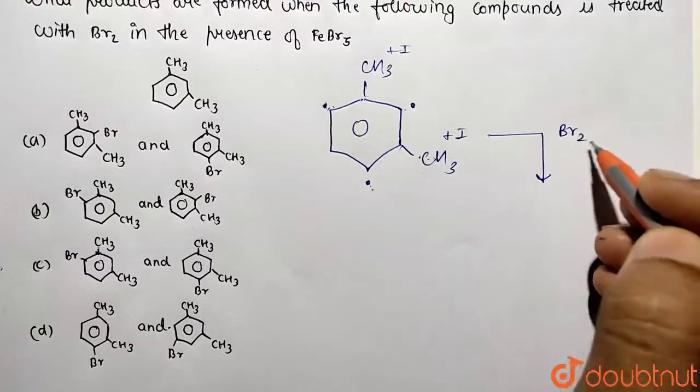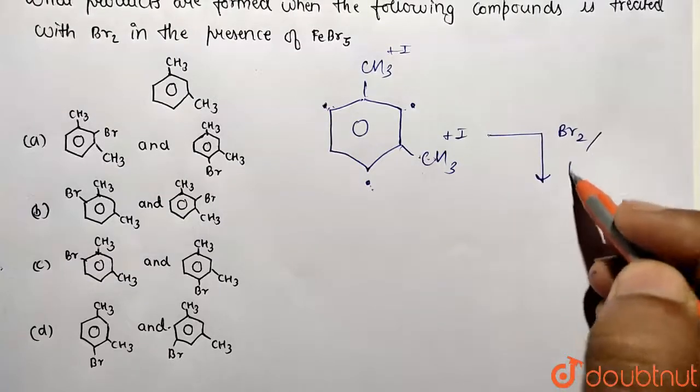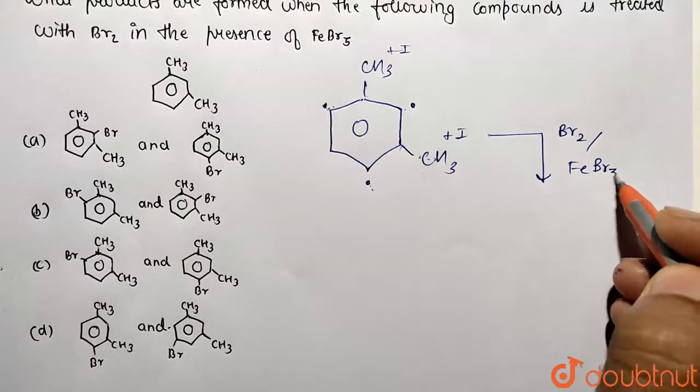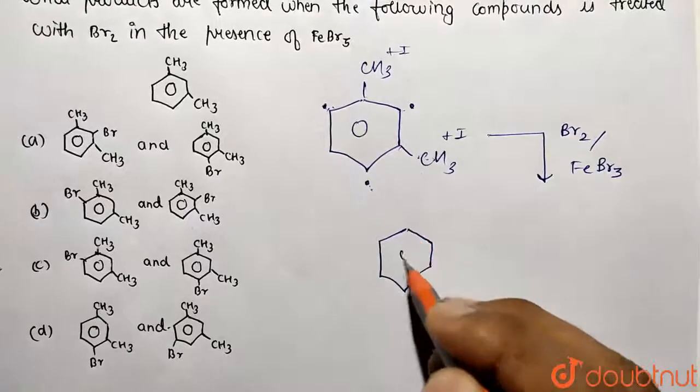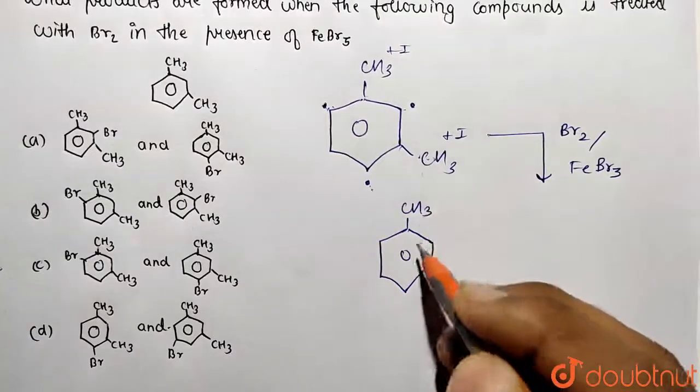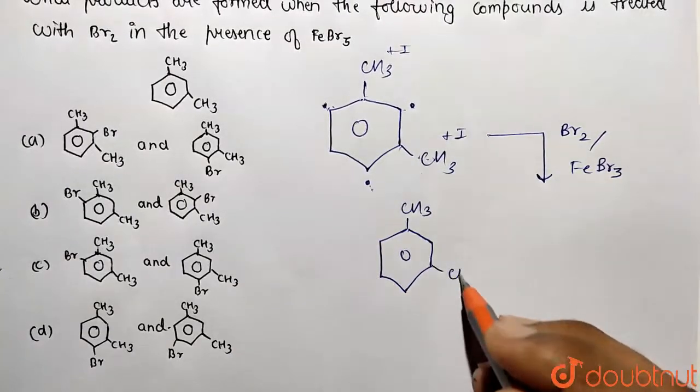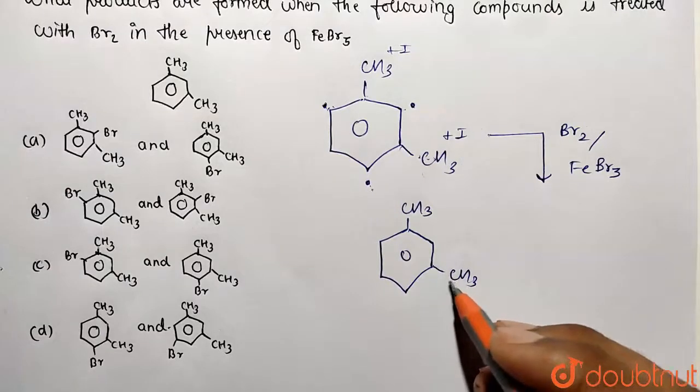So Br2 is being added in the presence of FeBr3 molecule. Over here, two products will be formed. One is going to be for this one - this CH3 molecule and CH3 molecule, one time addition done on the para position.